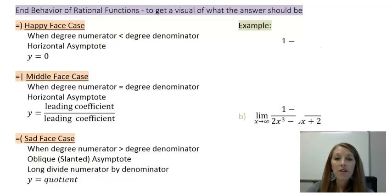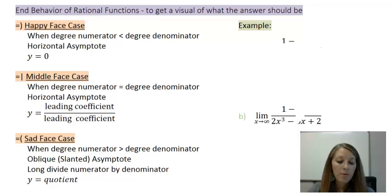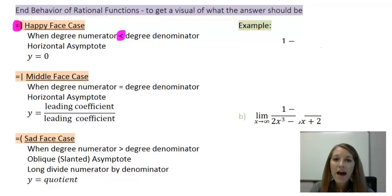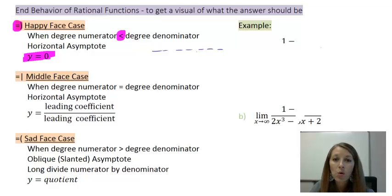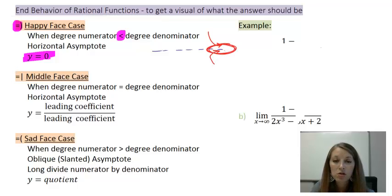We did this by using the face case — looking at the degree of the numerator versus the degree of the denominator. We had three different instances. In the first instance, the numerator degree is less than the denominator degree. That puts us in happy face case because we have absolutely no work to do. That gives us a horizontal asymptote at y equals zero, meaning our graph is going to approach this horizontal asymptote — it might approach from the top or the bottom, but the farther out we get, the closer and closer we get to that value.